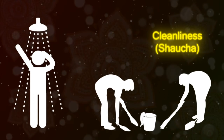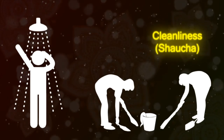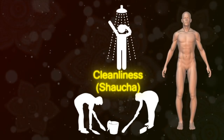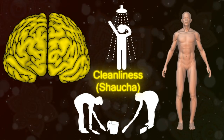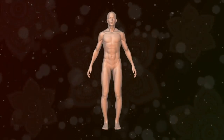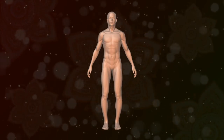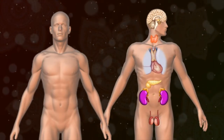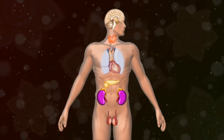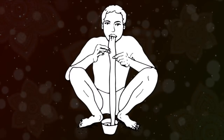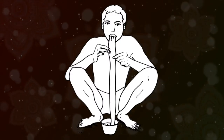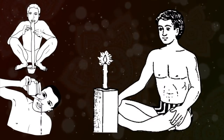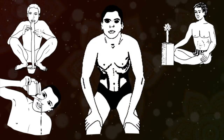First is Cleanliness, or Sauch. This denotes purity which is not only physical but oral and mental too. Physical purity is again divided into two parts: outer and inner. There are six types of Shuddhi Kriyas for internal purity, which are Dhauti, Basti, Neti, Tratak, Nauli, and Kapalbhadi.